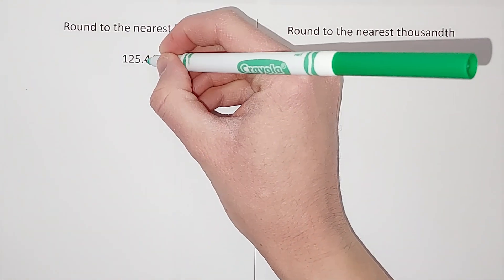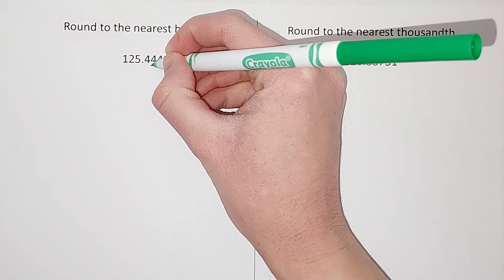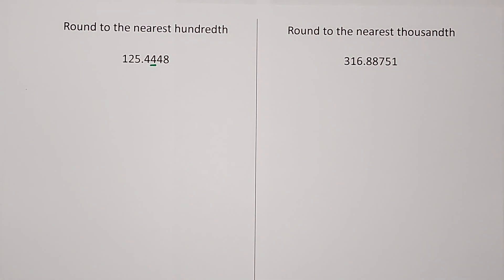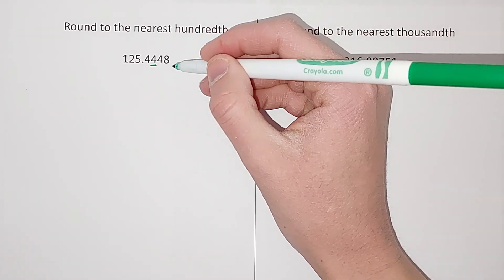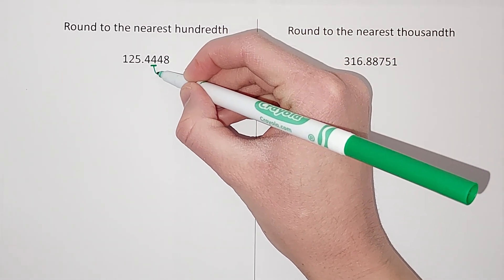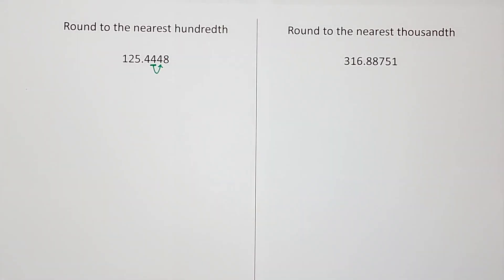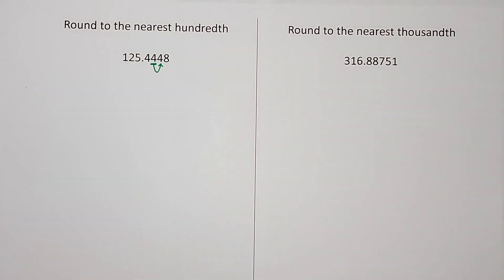So when we round, we figure out how many numbers they want, right? They want two after the decimal place. Then we look at the one behind it. That is what determines if this will stay a four or go up to a five. So if the number is from zero to four, this number stays the same.